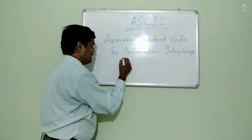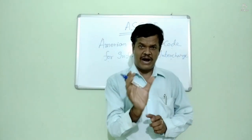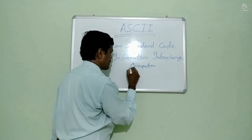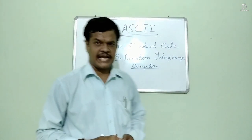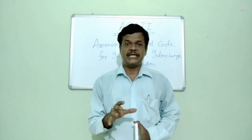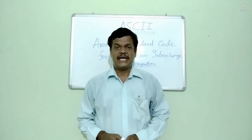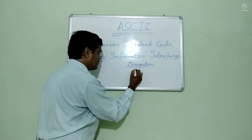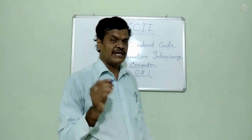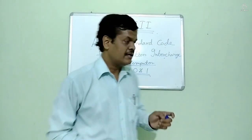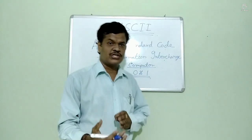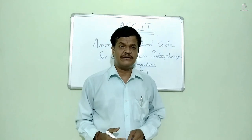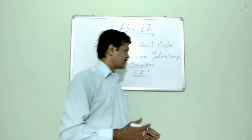If we type a word, suppose we type 'computer' — anything we can type. But you know that a computer system is an electronic device. That means it is a device which only understands binary numbers, that is 0 and 1. So the ASCII code helps us to convert the digits or the alphabet to the corresponding binary digits.